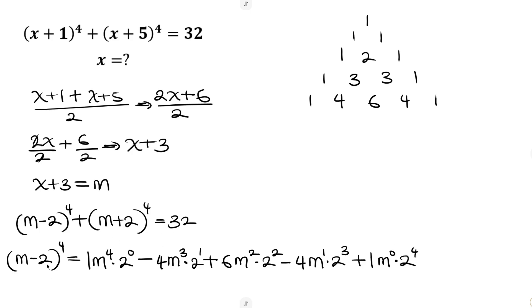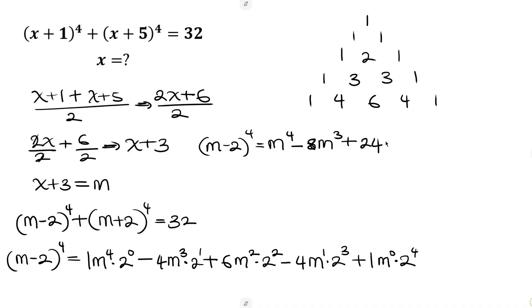Now let's simplify. (m minus 2)^4 becomes: 2 to power 0 is 1, so 1 times m^4 gives m^4, minus 2 times 4m cubed gives 8m cubed, plus 2 squared which is 4 times 6m squared gives 24m squared, minus 2 to power 3 which is 8 times 4m gives 32m, plus 2 to power 4 which is 16 times 1 gives 16.